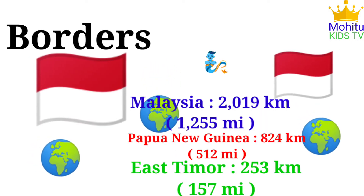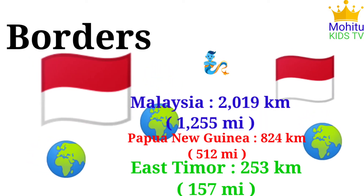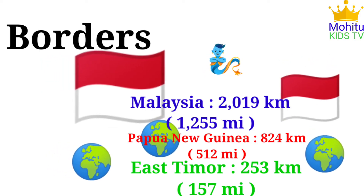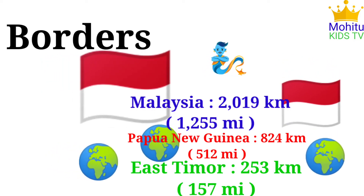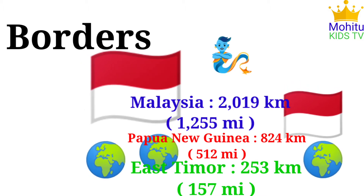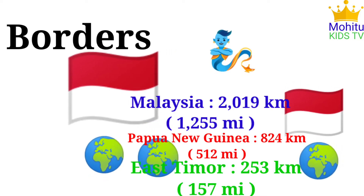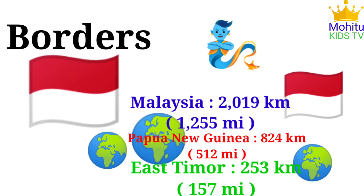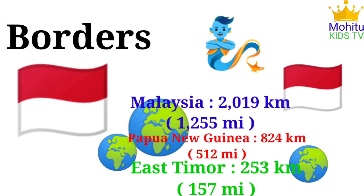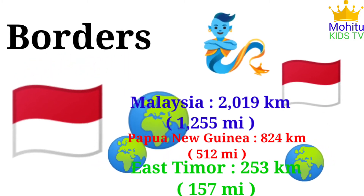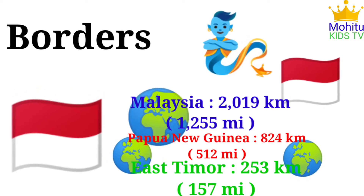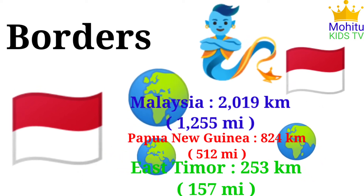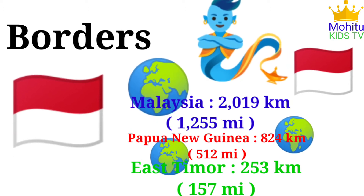Indonesia has three neighbors: Malaysia, 2,019 km (1,255 miles); Papua New Guinea, 824 km (512 miles); and East Timor, 253 km (157 miles).